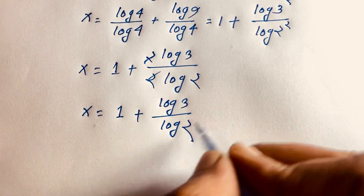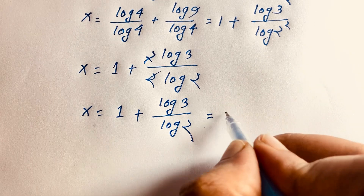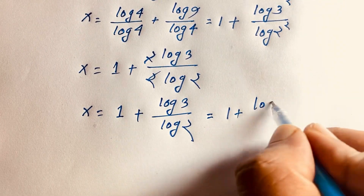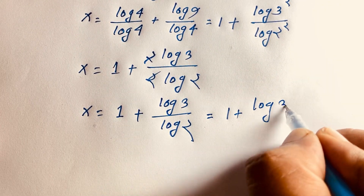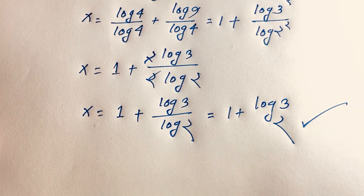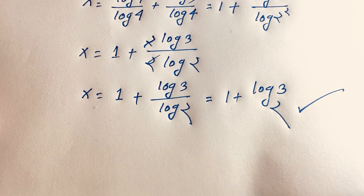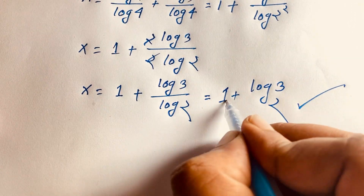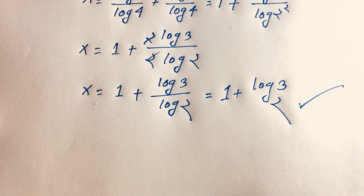Now, bringing the exponents to the front, we get x is equal to 1 plus 2 log 3 over 2 log 2, which simplifies to x is equal to 1 plus log 3 over log 2, or x is equal to 1 plus log base 2 of 3. This is our final answer.